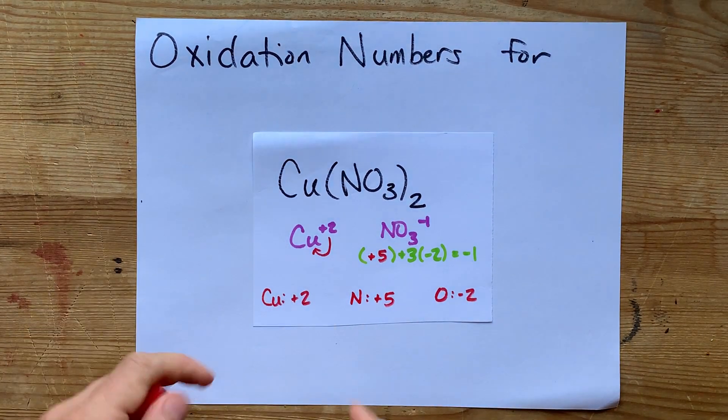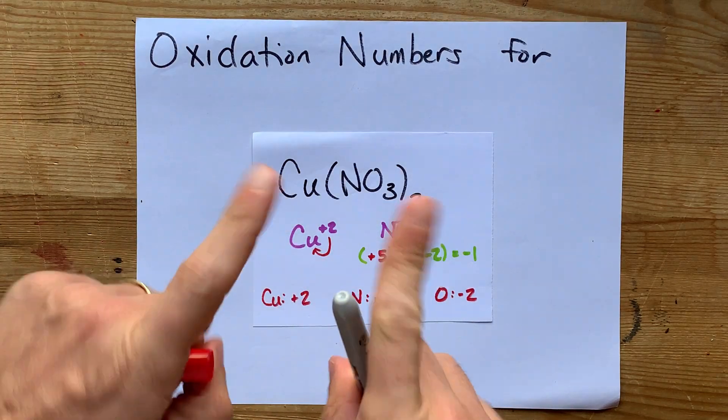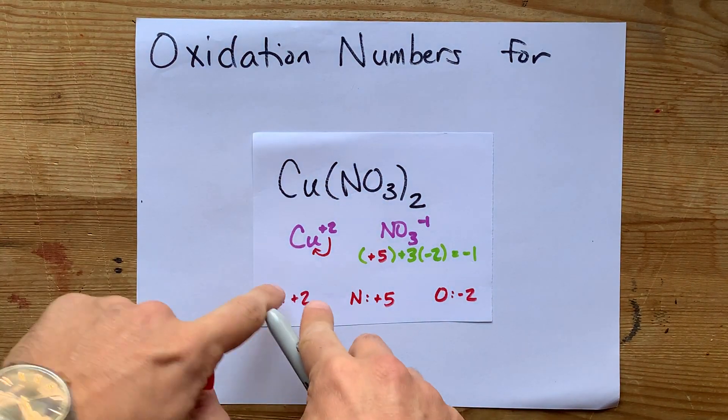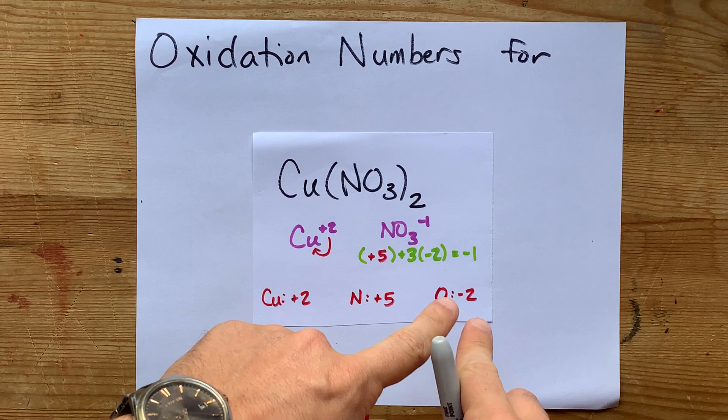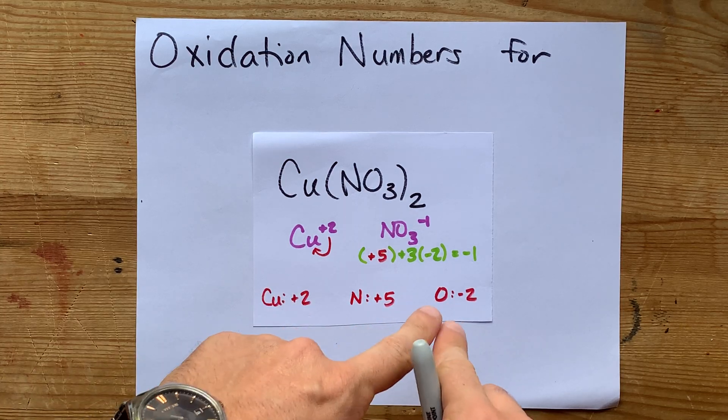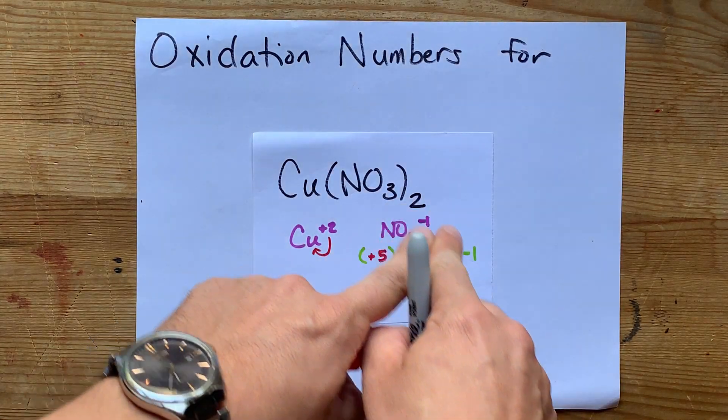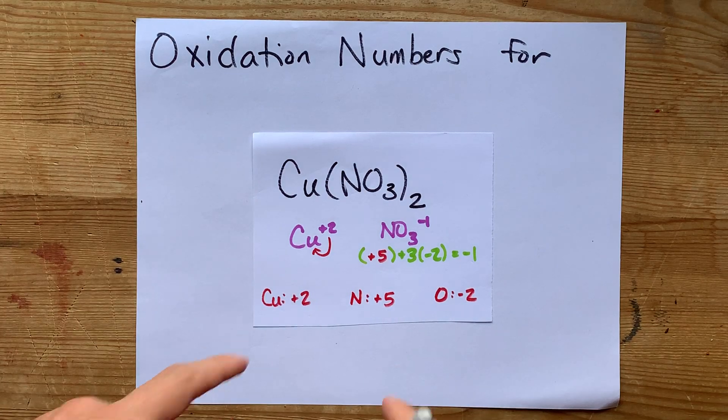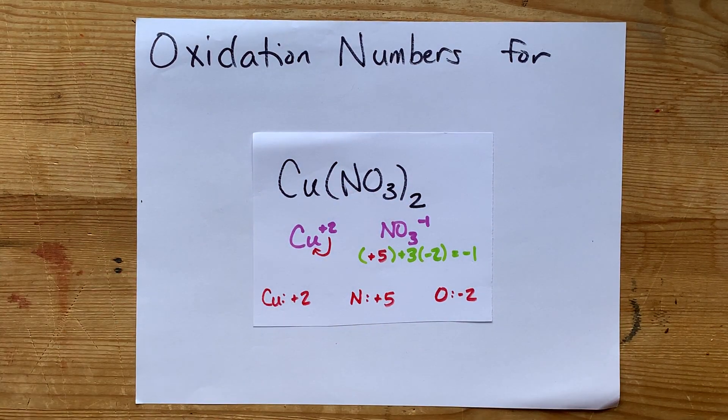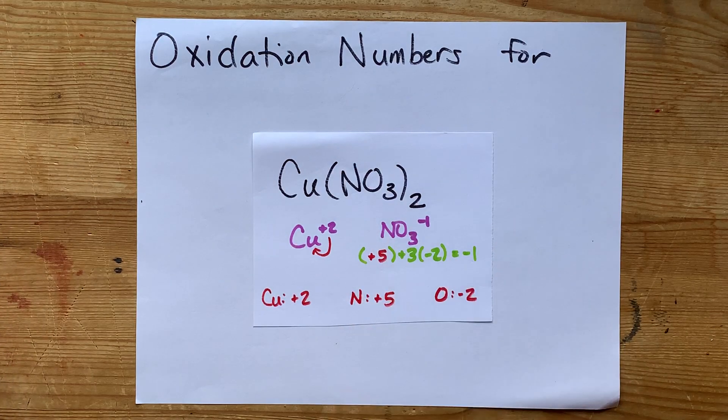Therefore, the copper has a charge, no, oxidation number of plus 2. Each oxygen has an oxidation number of minus 2, and each nitrogen has an oxidation number of plus 5. Congratulations, you finessed it. Best of luck.